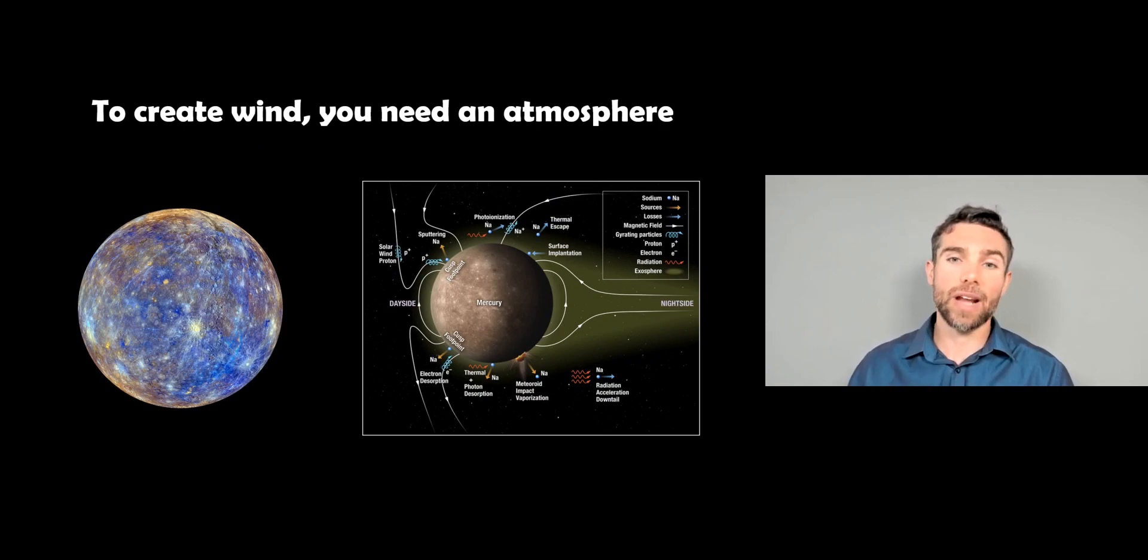Mercury doesn't really have an atmosphere. To create wind, you really need an atmosphere. You can't have wind in a vacuum. Mercury doesn't really have an atmosphere, but it does have an exosphere, which is a very tenuous atmosphere made up of molecules that are knocked off its surface by the solar wind. It's not a proper atmosphere. So it's called an exosphere, and that is then kind of lost into space as well. We can't really talk about the wind speed there because it doesn't really have wind, so to speak, that we're familiar with.